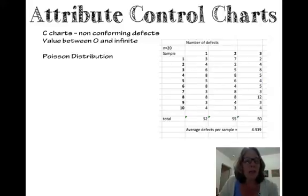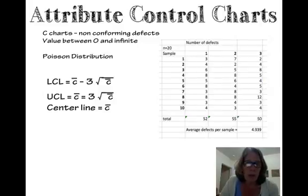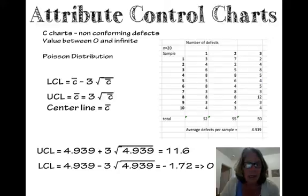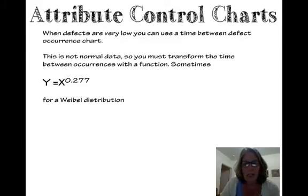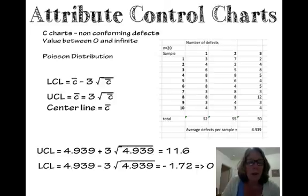This is a Poisson distribution when we use this type of definition of defects. The equations are here, where C is the average number of defects, and the square root of C is the standard deviation. We can just go ahead and plot it like this. In this case, we have lower control limits at minus 1.72, which is not possible, so it goes to 0. So it's between 11 and 0 are the values. Then we would go ahead and put that on a control chart.